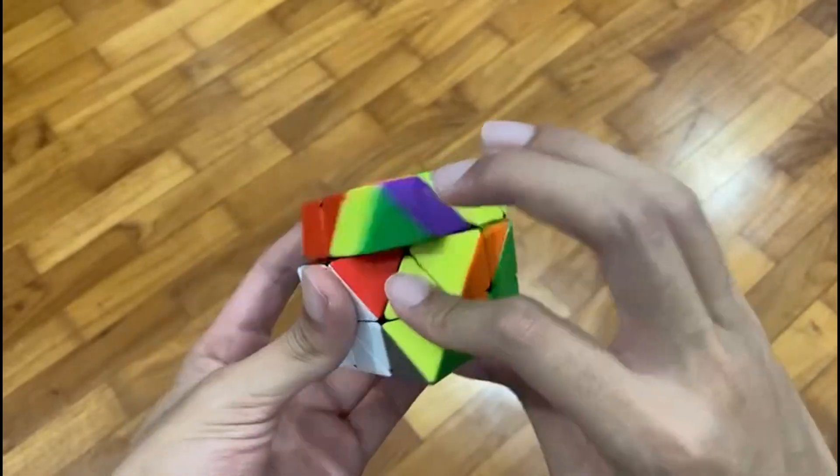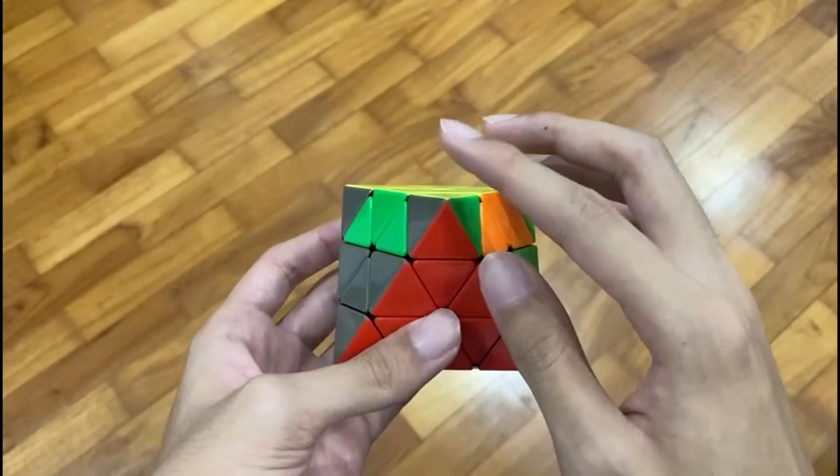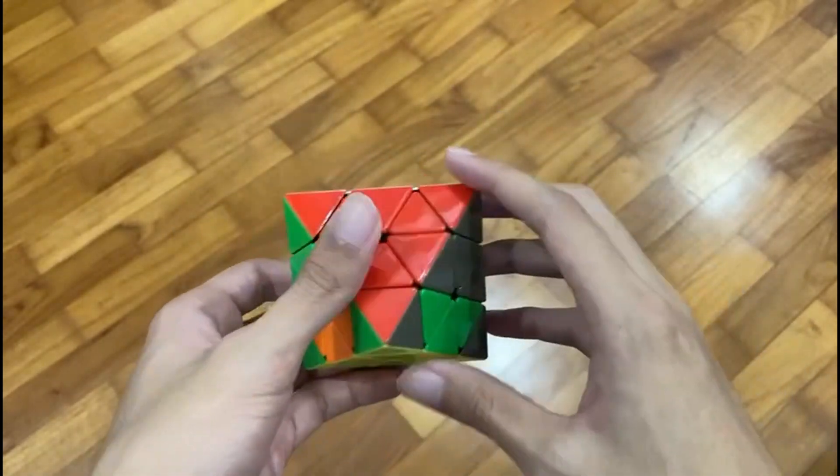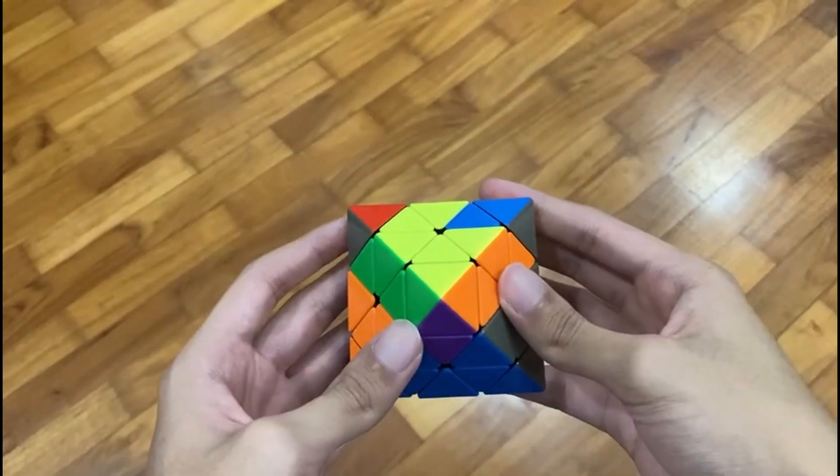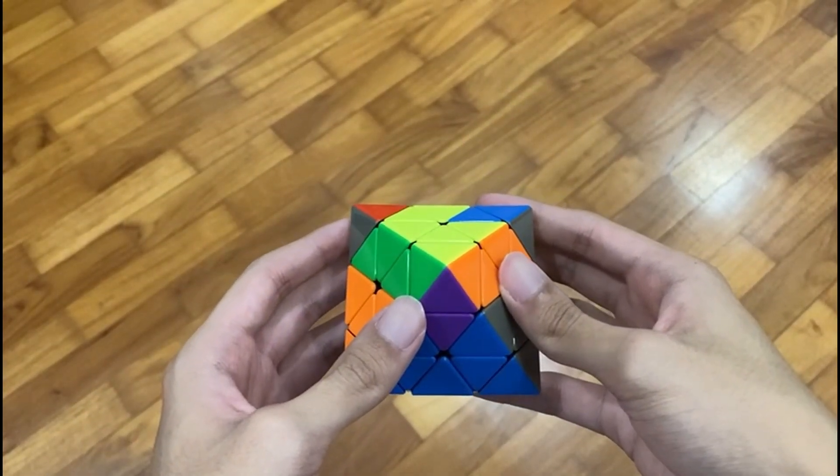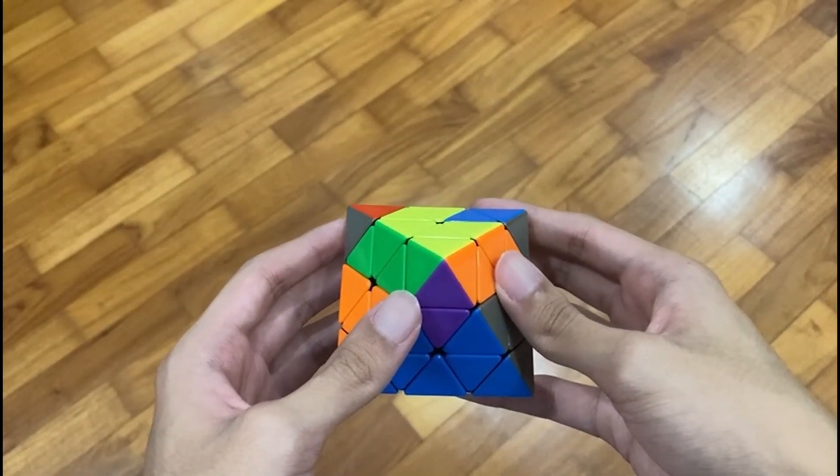And once you're done pairing all three of your triplets, you would end up trying to sledge or hedge it into a slot, and you would end up with just a corner permutation algorithm left. However, this method of solving L3T is incredibly unreliable and causes a lot of pain and frustration.